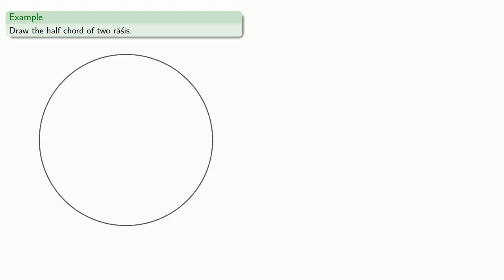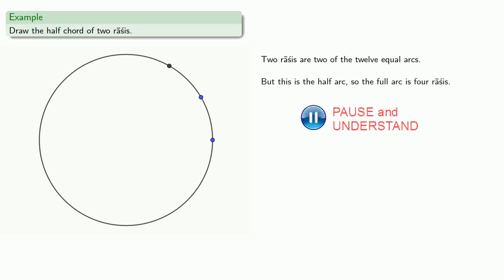So, for example, let's try to draw that half-chord of two racis. So remember, two racis are two of the twelve equal arcs. But since we're talking about the half-chord, this amount is actually the half-arc. So the full arc is four racis, and the half-chord is half the chord of the full arc.